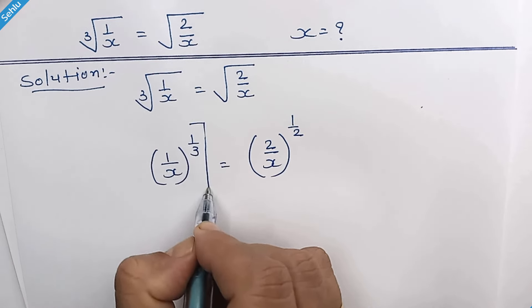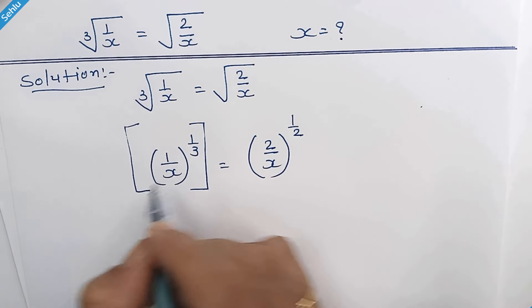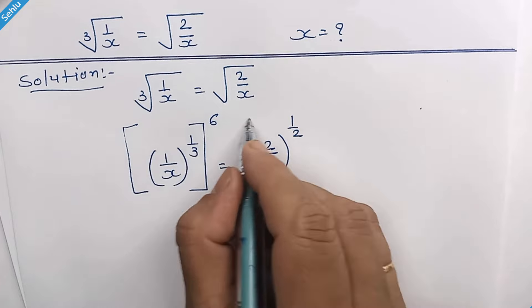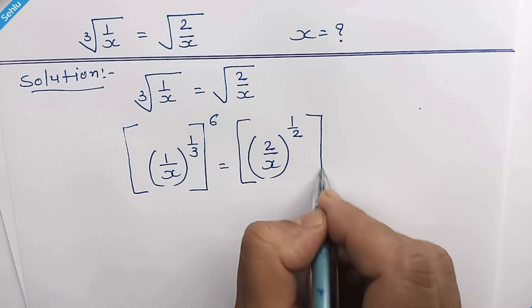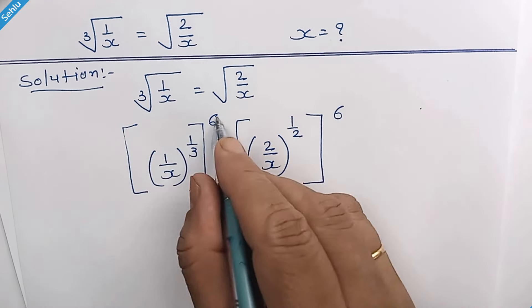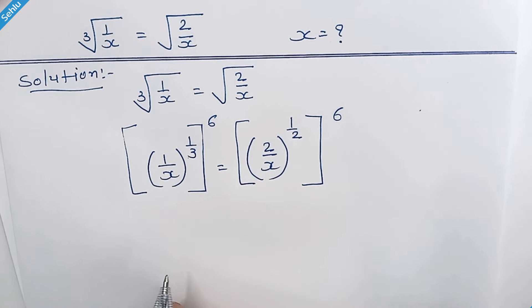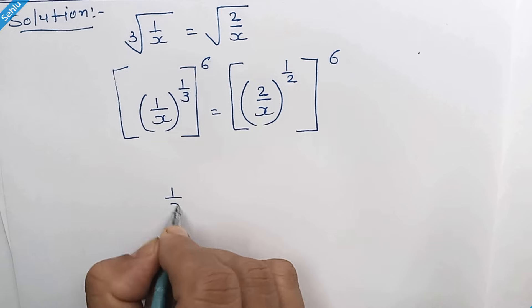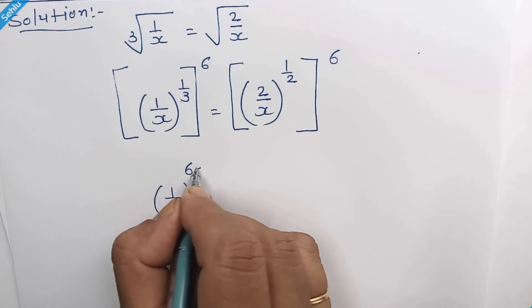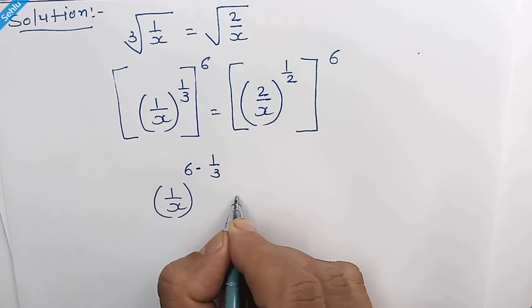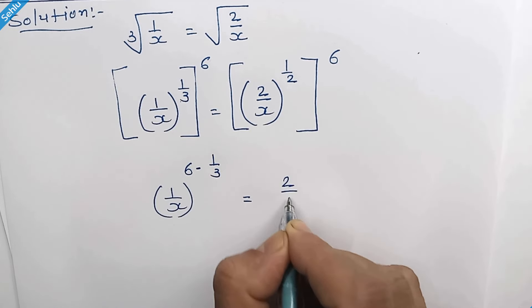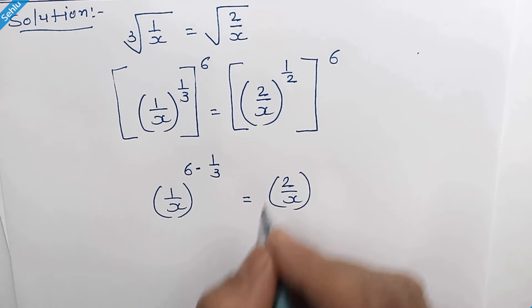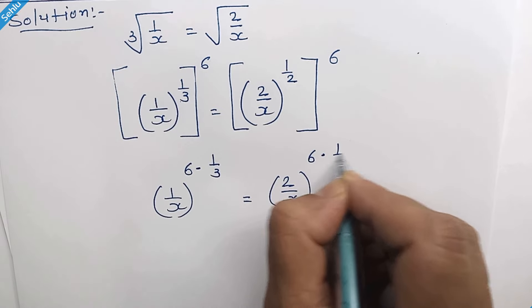Now in the next step, we will raise 6 both the sides. This 2 and this 2 can multiply. So our next step will be 1 over x whole to the power 6 times 1 over 3 is equal to 2 over x whole to the power 6 times 1 over 2.